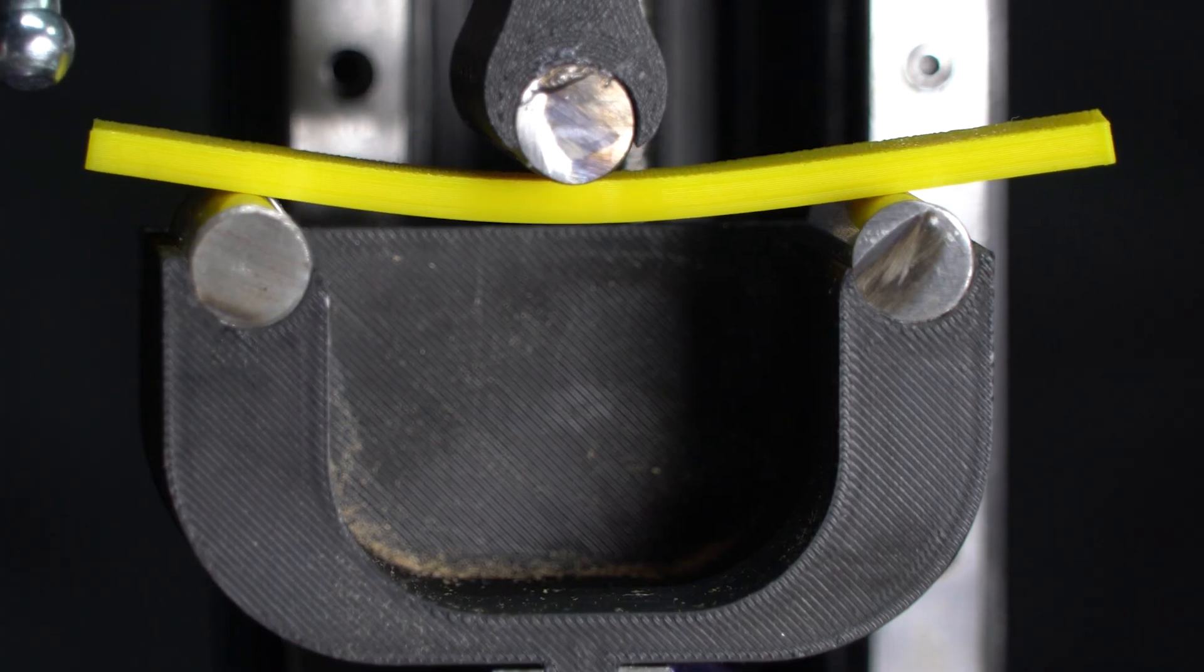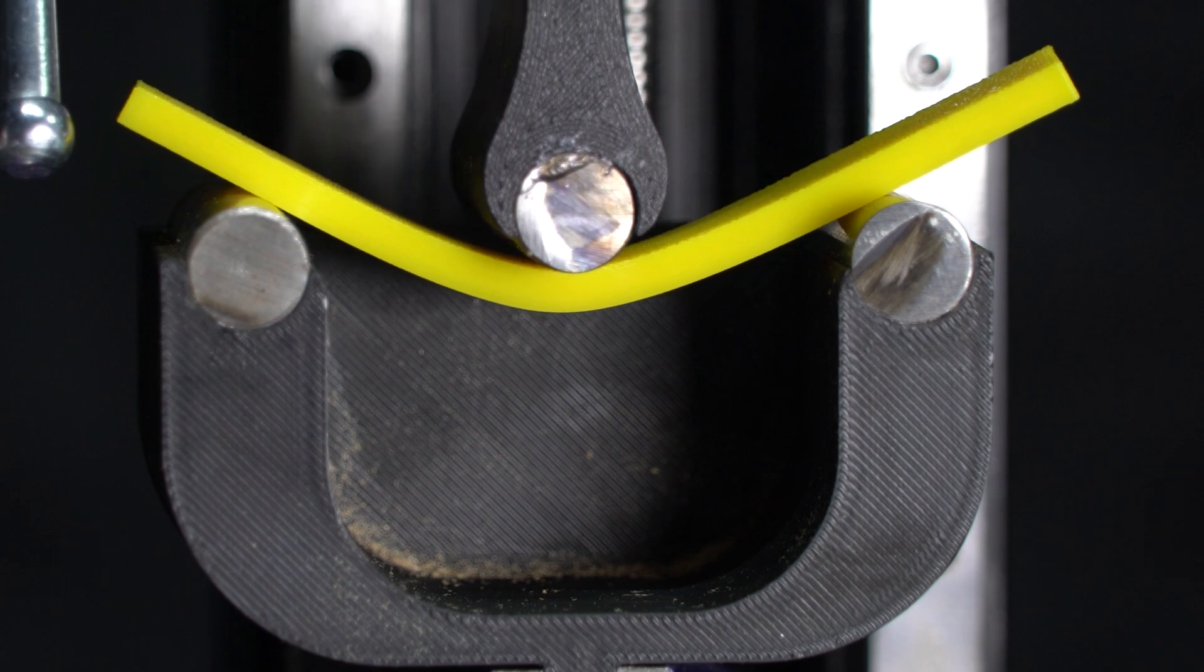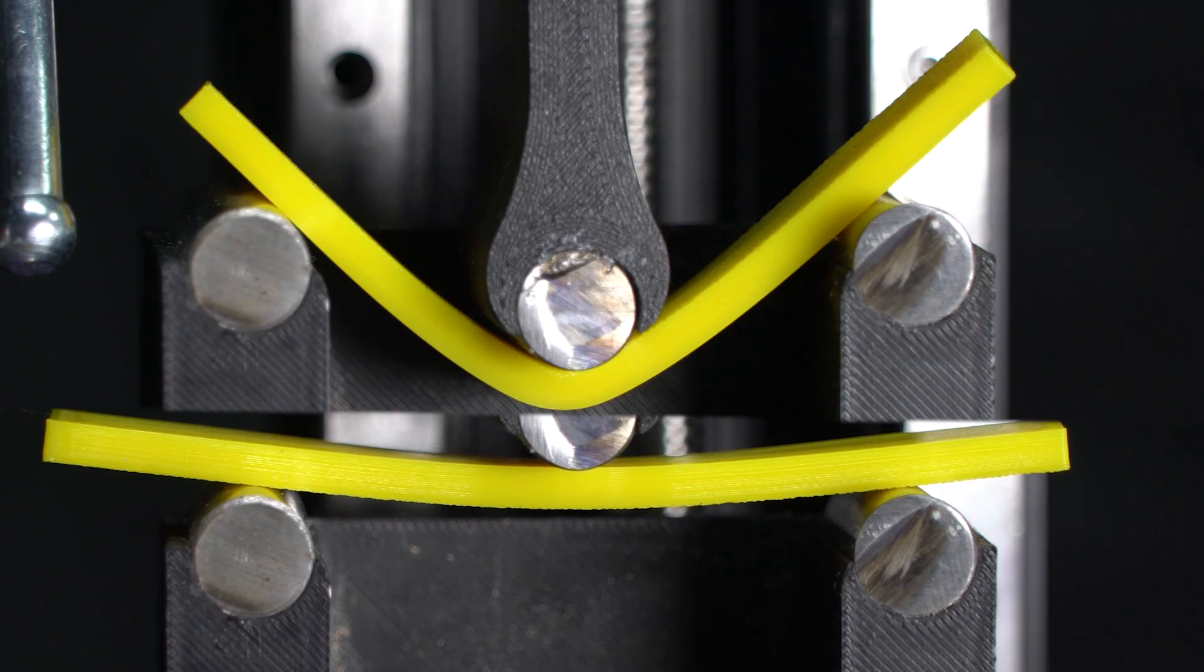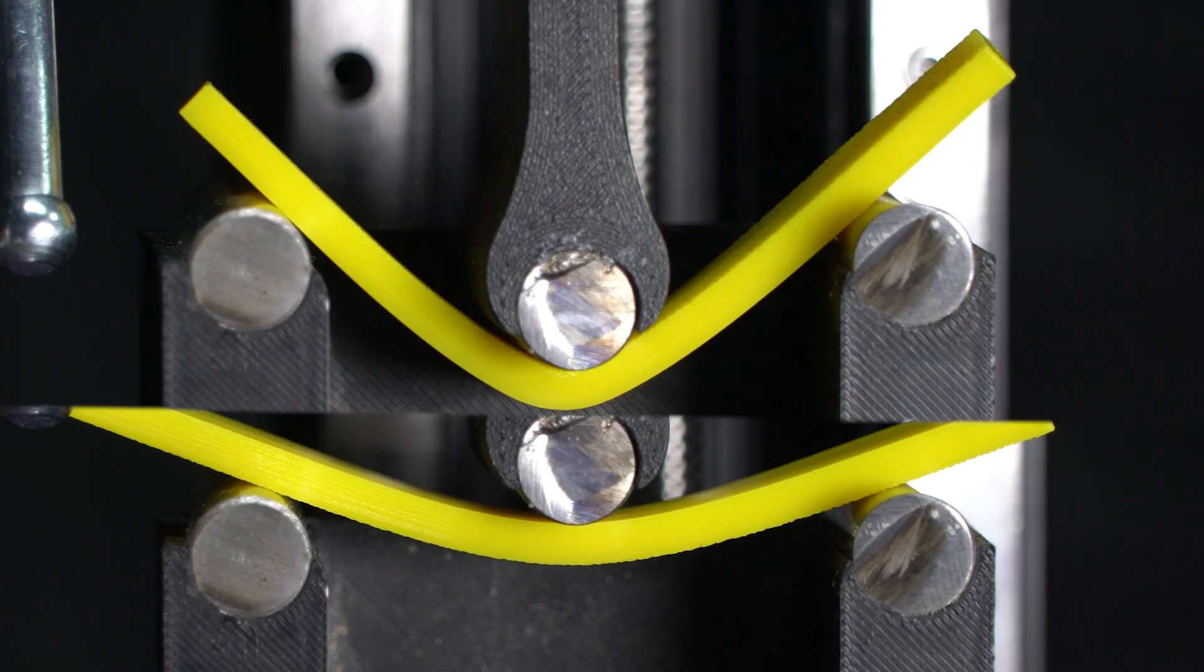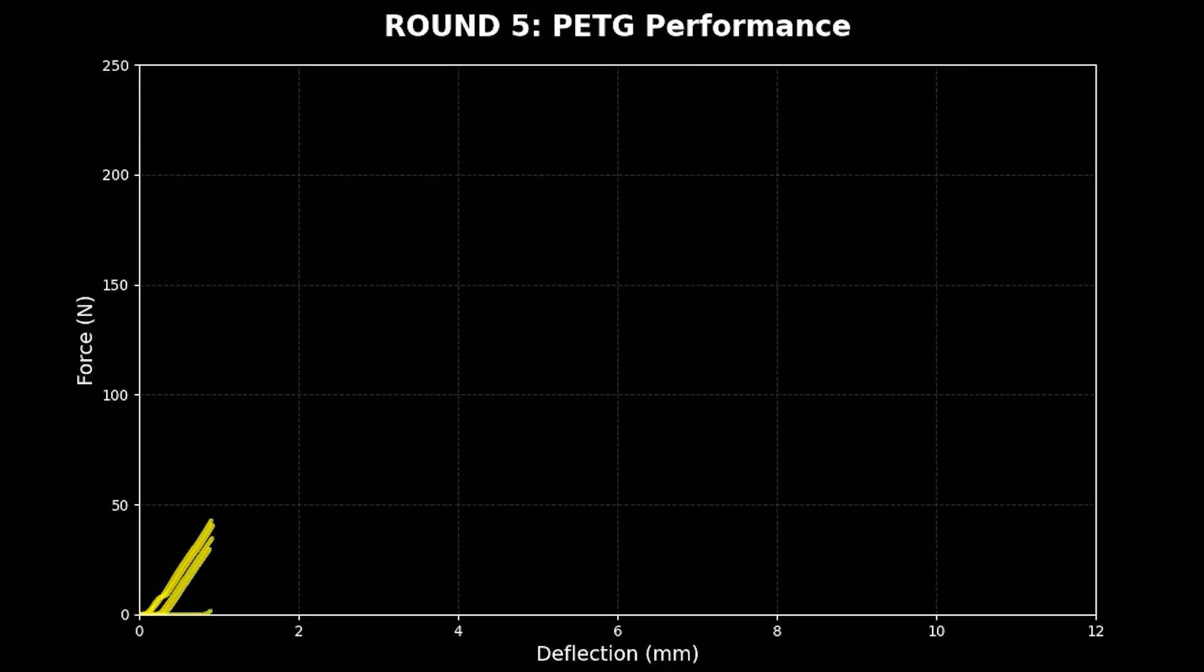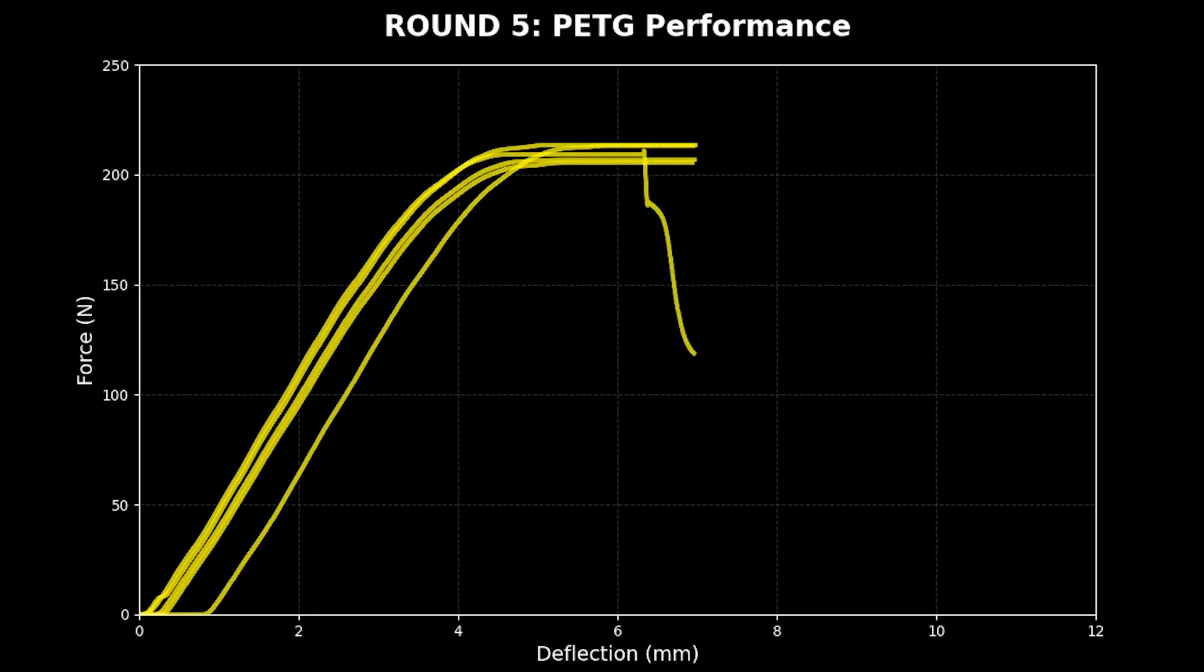Next up is PETG. PETG is much more stubborn than ABS. It doesn't give up easily. The graph shows a steady, determined climb. Definitely a better performance than ABS.